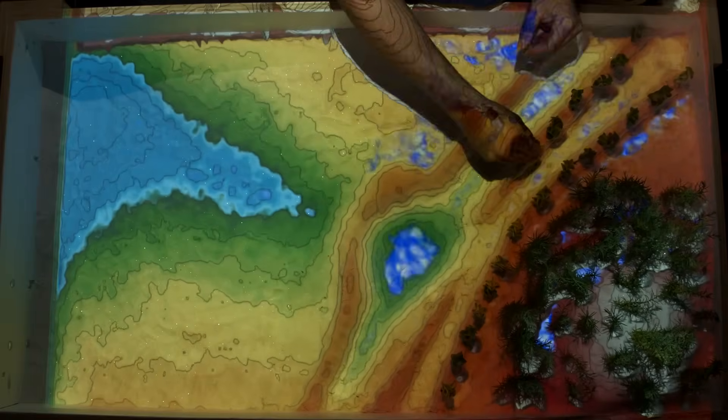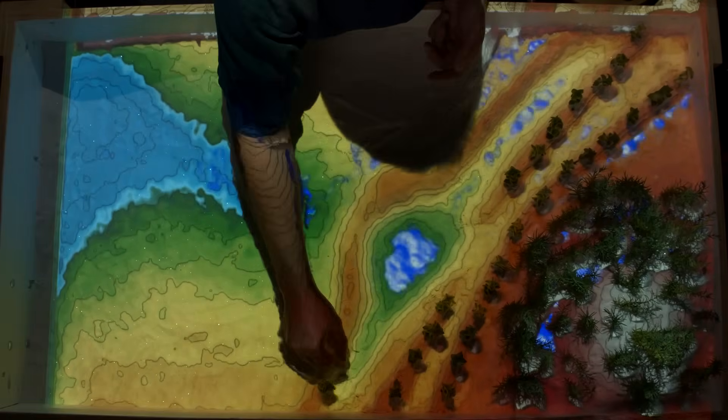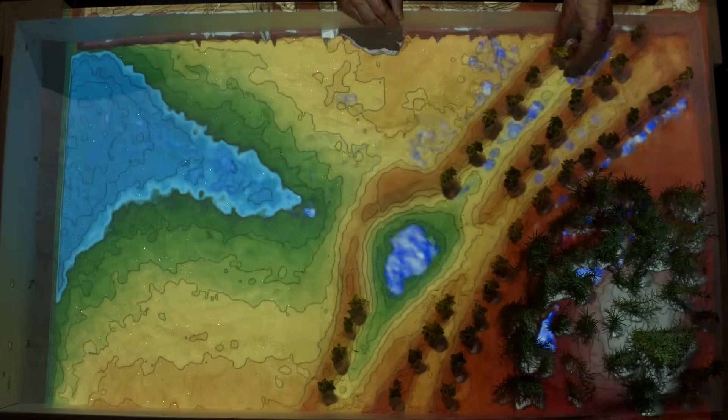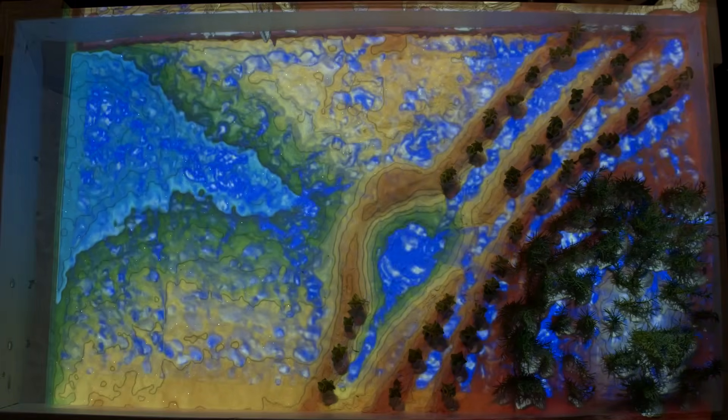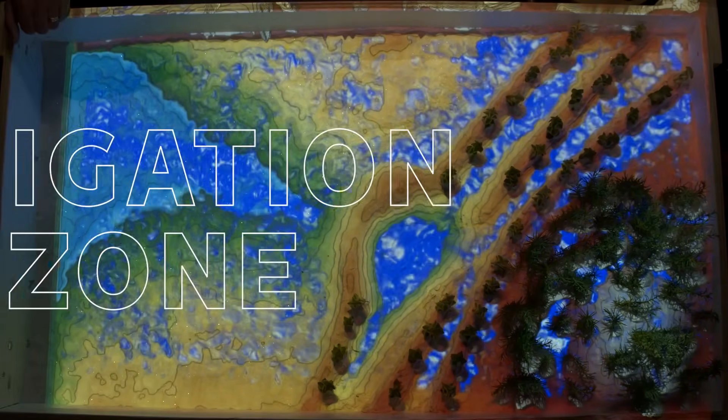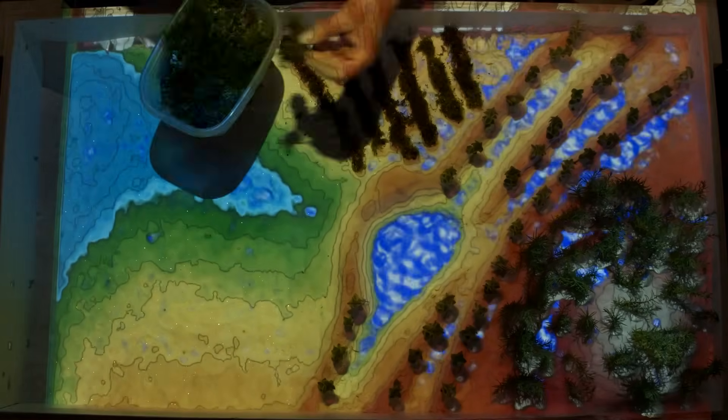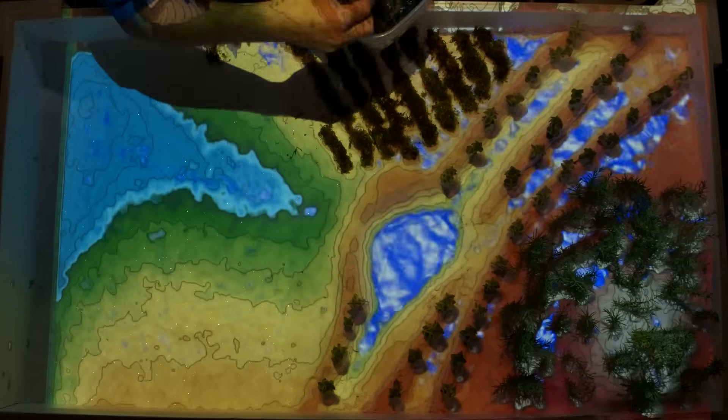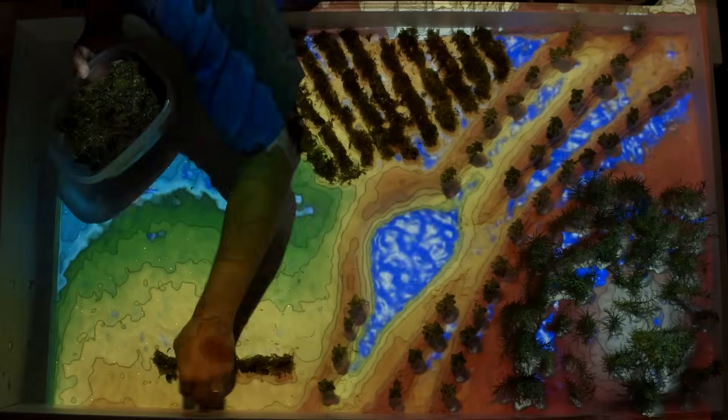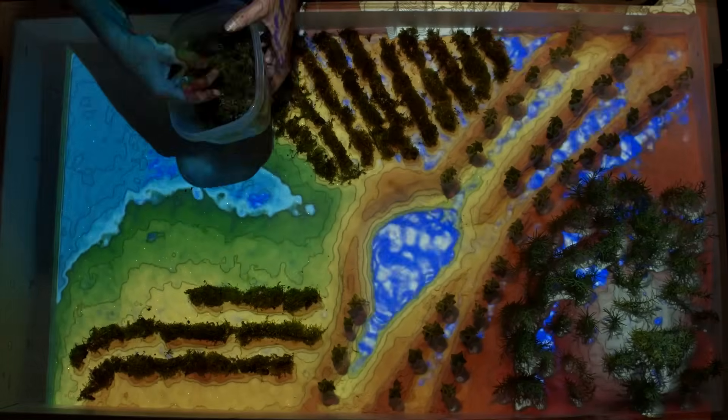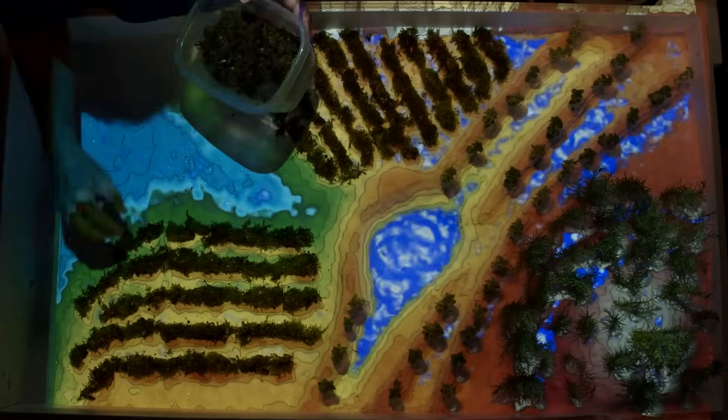So as we move down the landscape, the slopes get more gentle. And that stored water here can be used to grow crops below in the irrigation zone. So the irrigation zone here is cropland, where the majority of what we consider agriculture takes place. There are strong relationships between the irrigation zone and the catchment and retention zones.